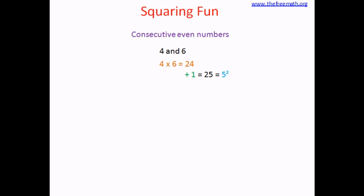Let's consider one more pair of consecutive even numbers, 6 and 8. Multiply these two numbers, so 6 times 8 is 48, add 1 and you get 49 which is the square of 7.